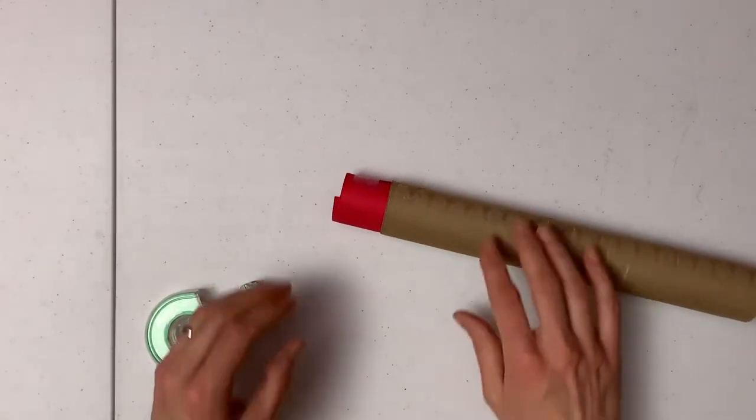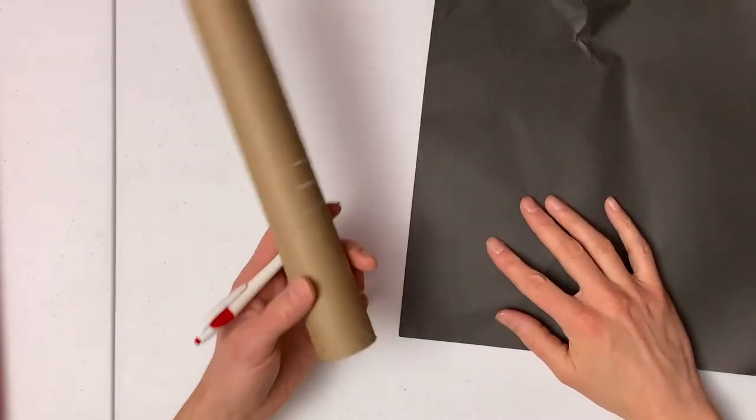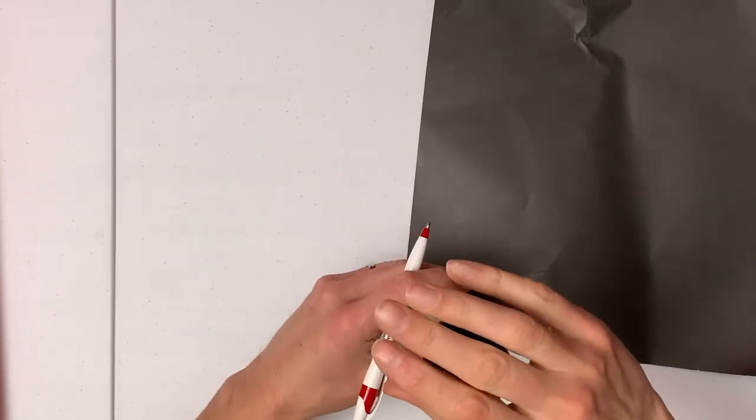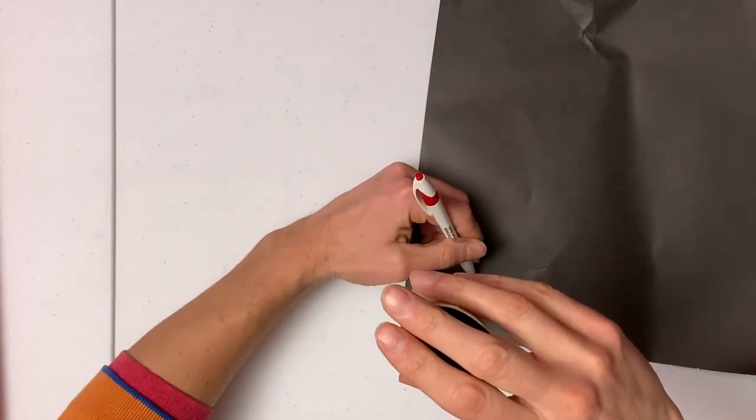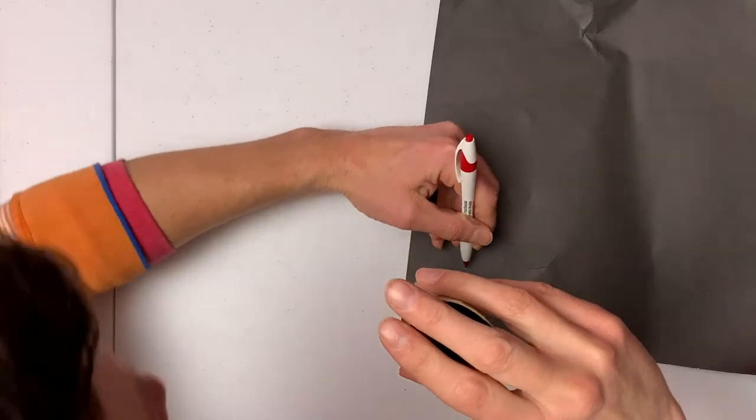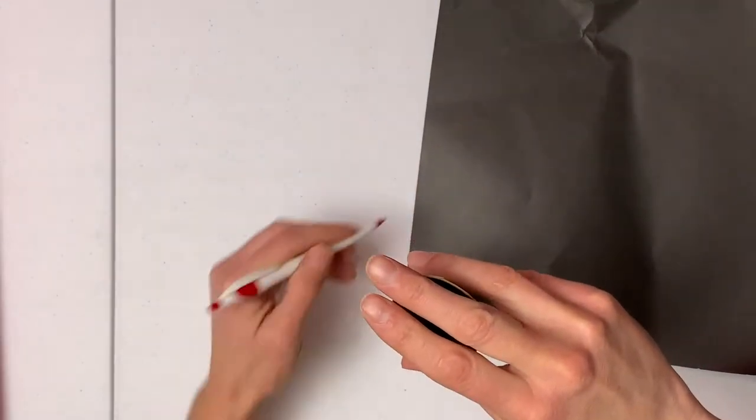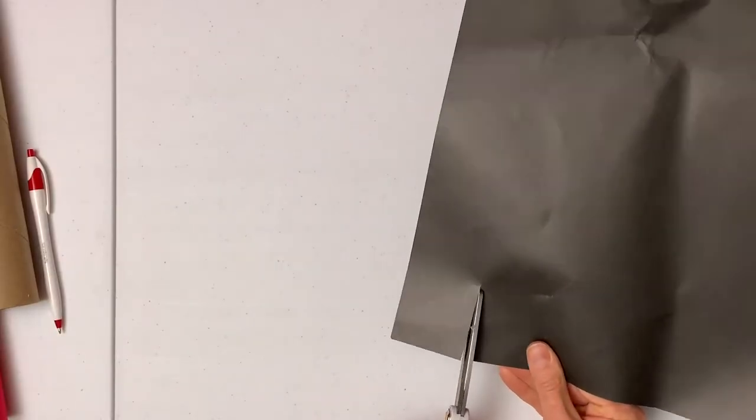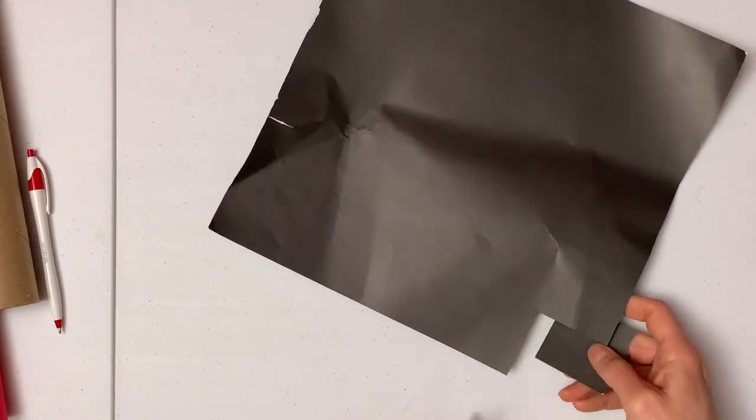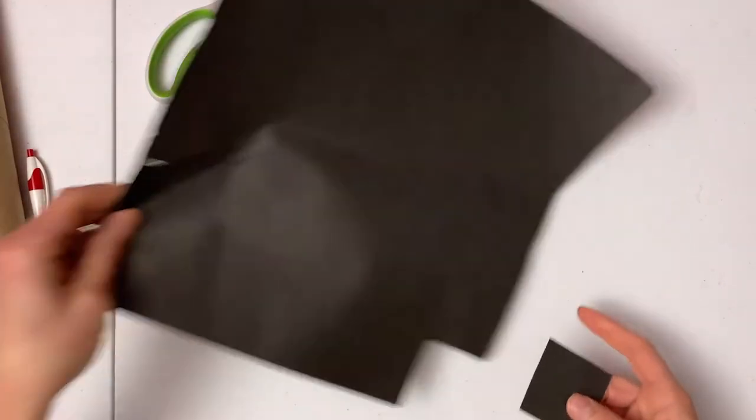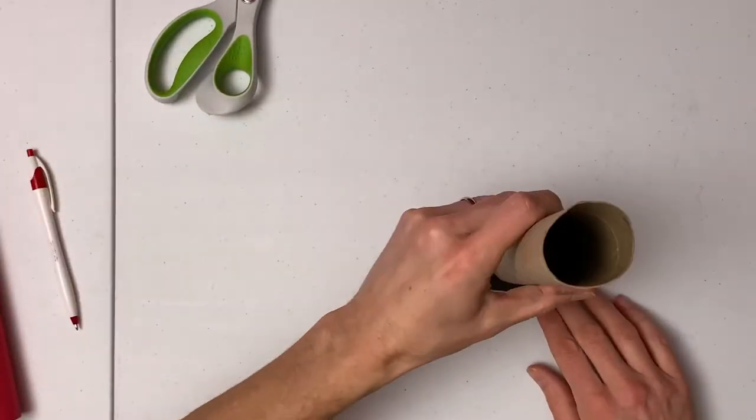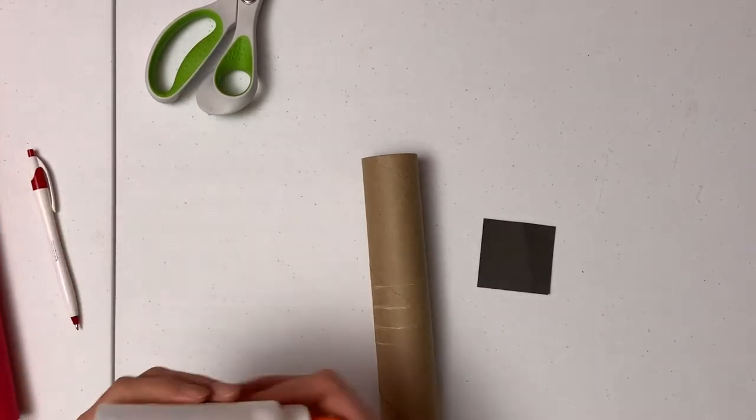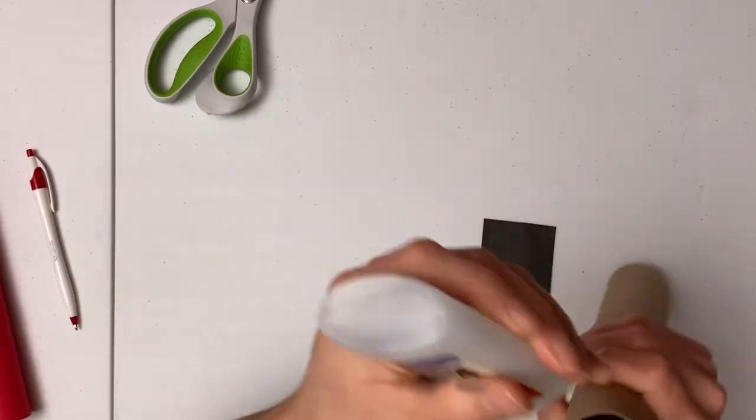Our next step is we're going to cut out the end that we're going to make the pinhole out of. I just want it to be a little bit bigger than my tube, so I'm just going to make a quick mark here. Then we're just going to glue this right in the center, so we're going to do this now so it can set up for 10 or 15 minutes before we move it.